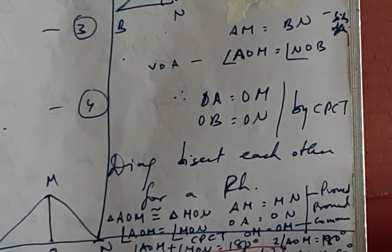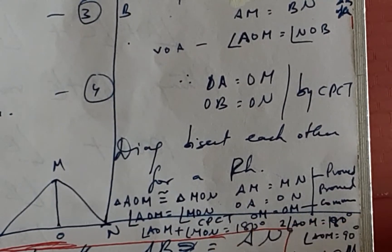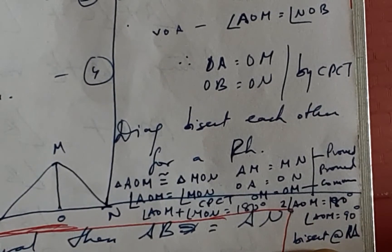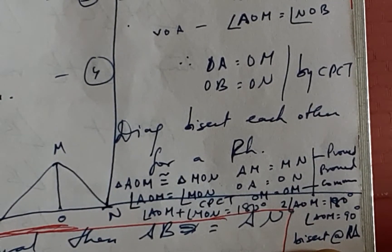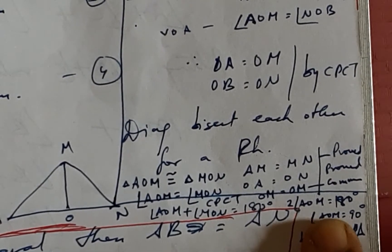And also from the congruency, another thing is established that these two being equal, it comes out to be AOM becomes 90 degrees and hence they're bisected at right angles. This is the final proof to conclusively say that it is a rhombus.